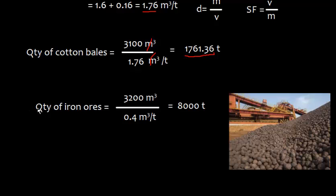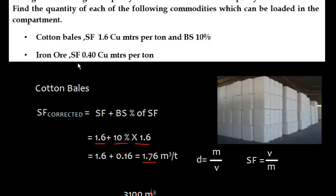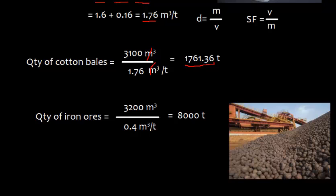Similarly, the quantity of iron ore is volume divided by storage factor. Iron ore has a storage factor of 0.4. Since iron ore is a bulk commodity, we use the grain capacity of 3,200 cubic meters rather than the bale capacity of 3,100, giving a quantity of 8,000 tons.